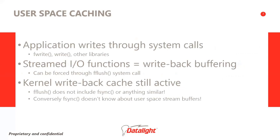An application can write data through a variety of system calls like fwrite or write, or via various library functions or high-level programming languages such as Java. In some cases, the I/O functions include user-space write-back buffering. A prominent example is the streamed I/O functions provided in the C library. If fwrite, fprintf, or fputc is used to write to a file, that write is buffered in user space. An application can force those buffers into the kernel buffers by means of an fflush system call; however, that write is still write-back cached by the kernel. Fflush does not include an fsync or anything similar.